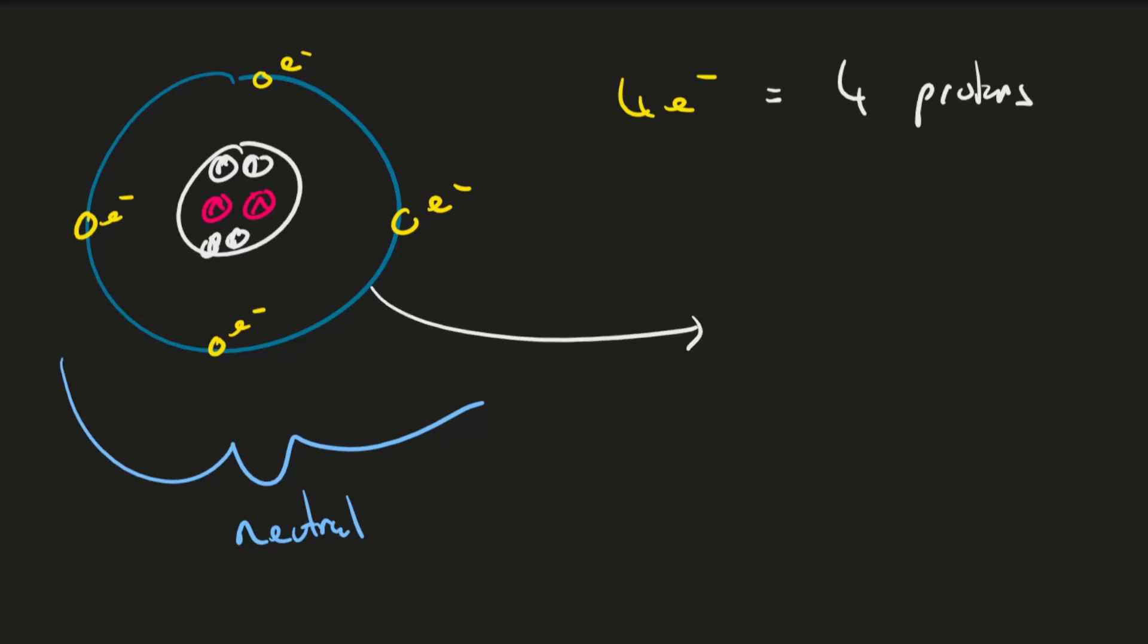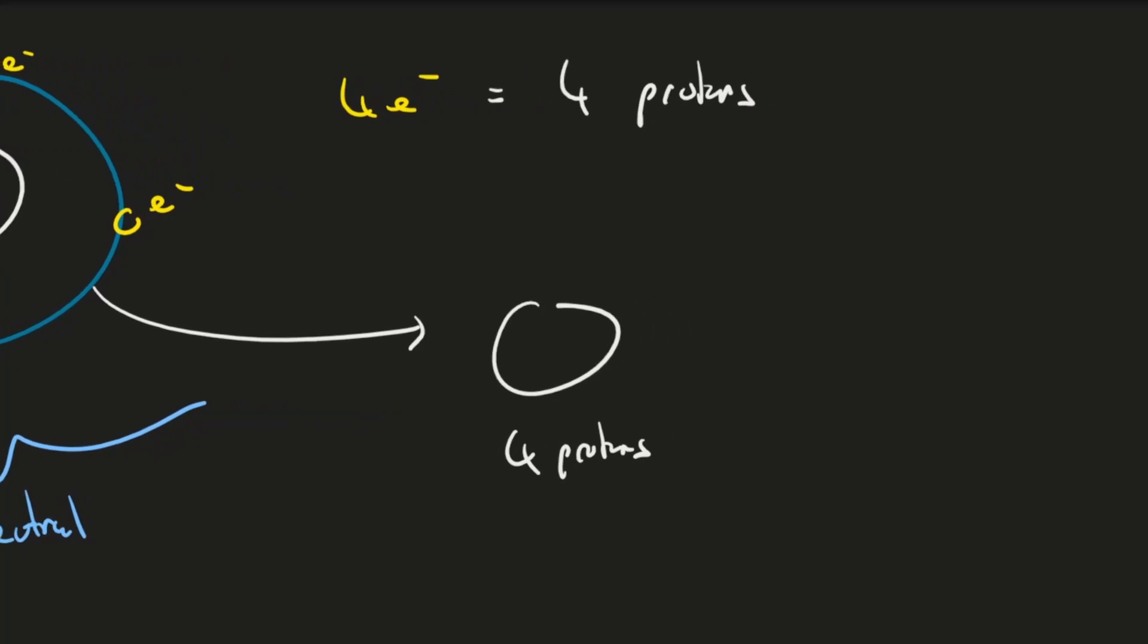For example, if we have an atom with, let's say, four protons, we'll call this Element A, and we can look this up in the periodic table.